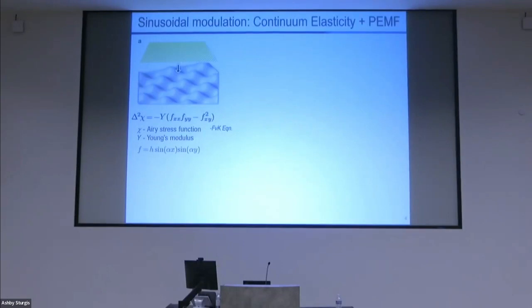We take a 2D semiconductor, put it on a certain substrate, and the substrate can be used to impart strain to the 2D material. For our case of boron nitride, we took this analytical shape which is similar to an egg carton.